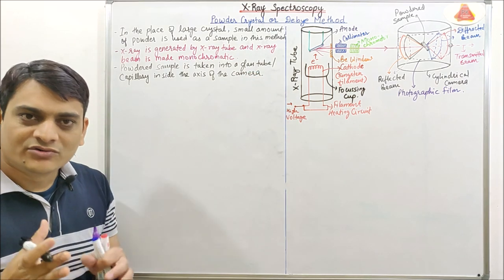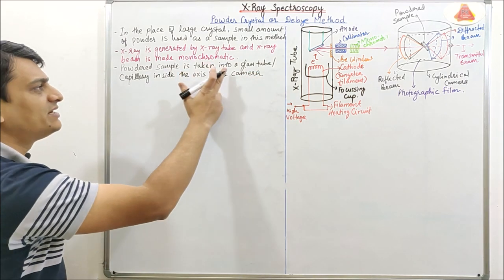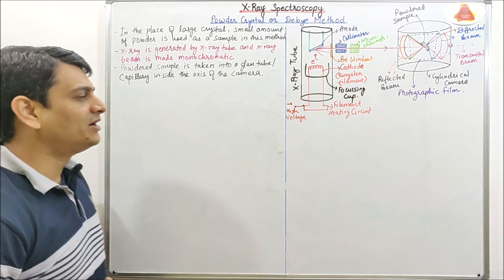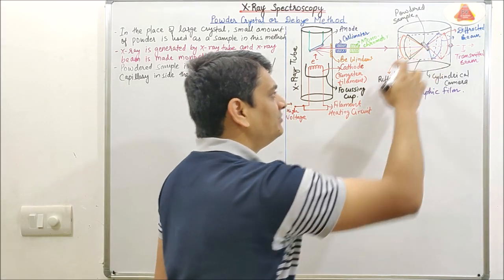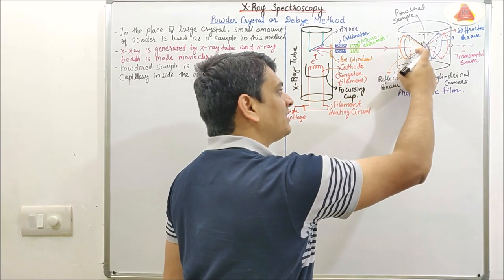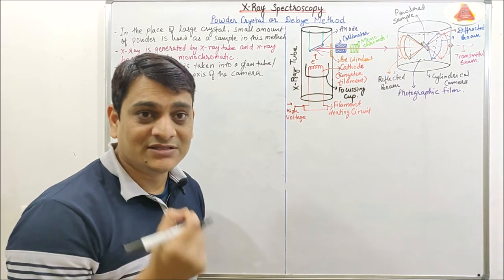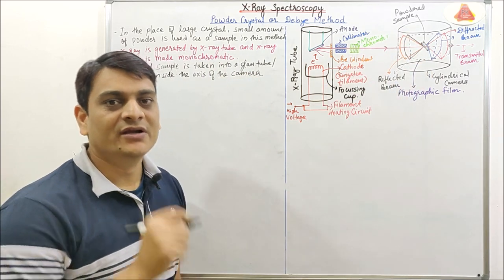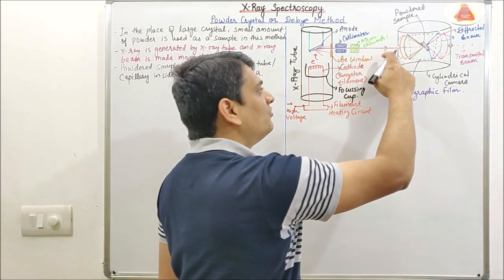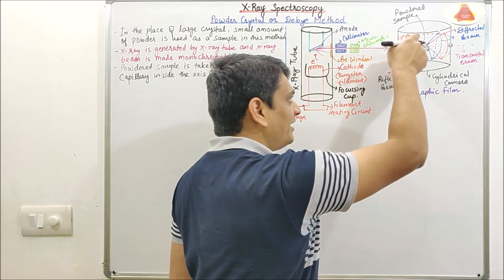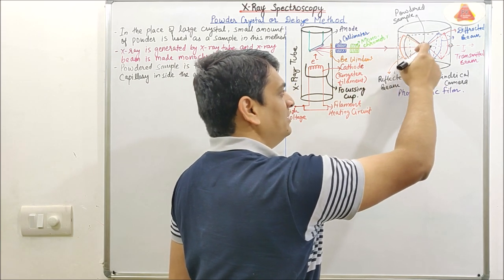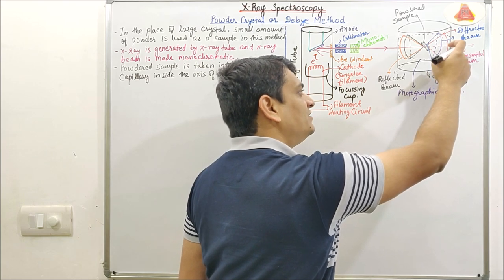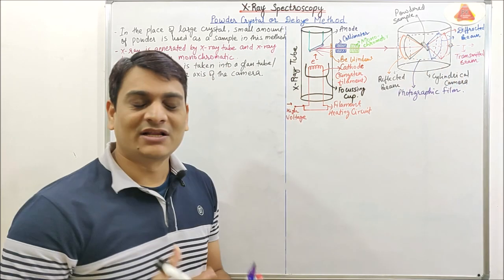The powdered sample is taken into a glass tube or capillary inside the axis of the camera. This is the axis of the camera and this is the capillary — inside the capillary we have to take a small amount of powdered sample. One hole will be present for entering the monochromatic beam, and then we have another hole which will help to exit the transmitted beam.